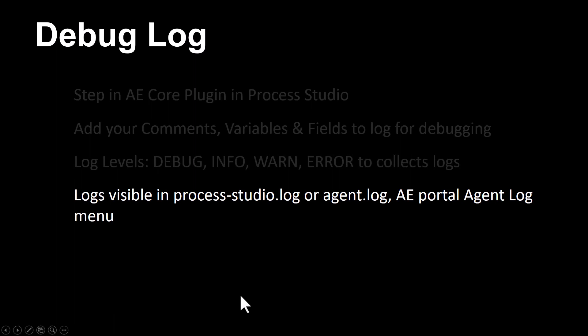Logs are visible in the Process Studio log file when you run the workflow in Process Studio. Or the logs are visible in the Agent Log file and the Automation Edge Portal Agent Log menu when you run the workflow from the Automation Edge Portal and an Automation Edge Agent executes the workflow. All logs at equal or higher level than this setting are visible in the Process Studio or Agent Logs.